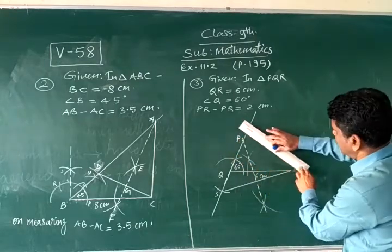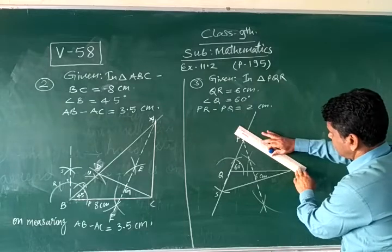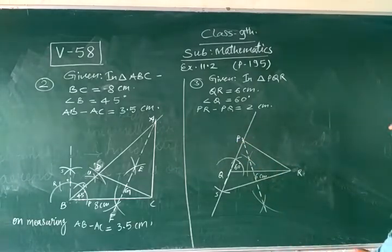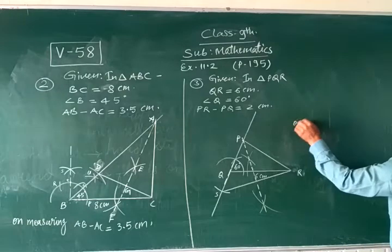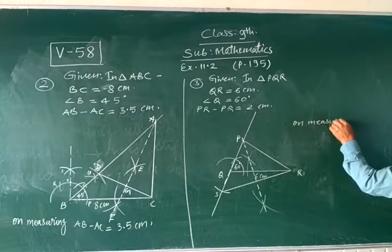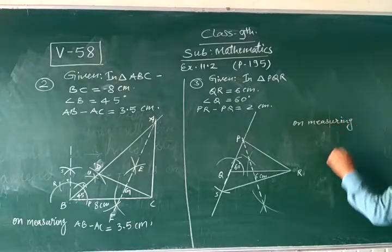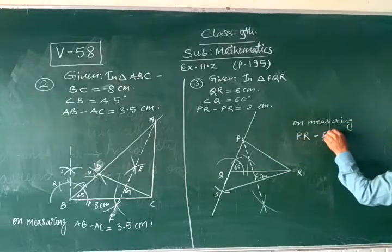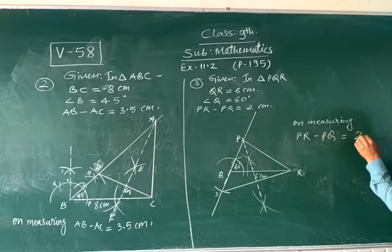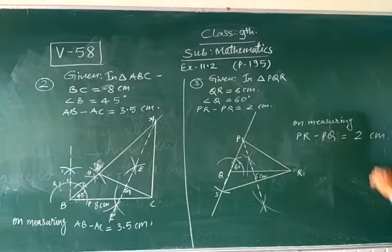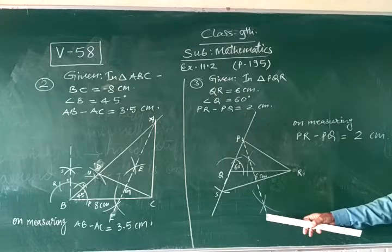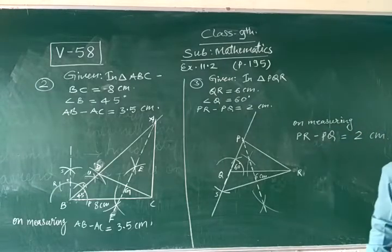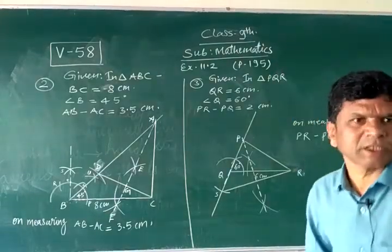And join PR. On measuring, PR minus PQ is equal to 2 cm. You have to draw with the measurement, particular measurement and you will see that PR minus PQ is 2 cm. Got it? Yes sir, you can draw.